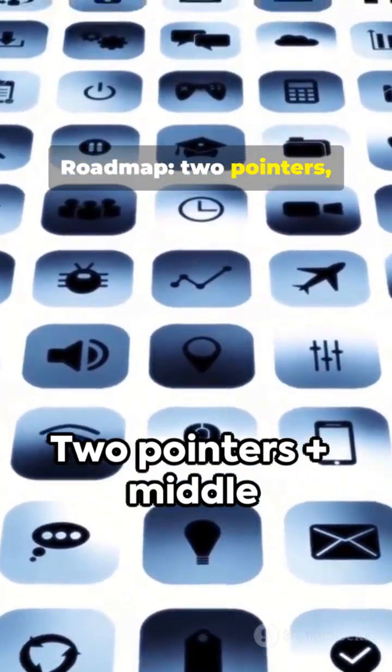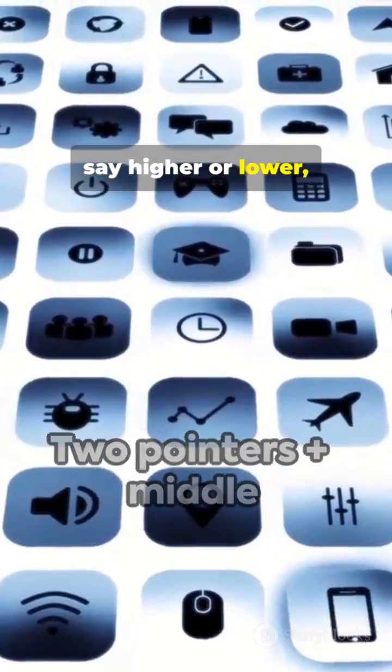Quick demo. Roadmap: two pointers, check the middle, say higher or lower, repeat.